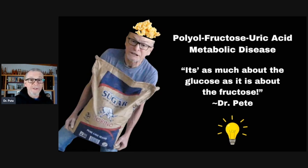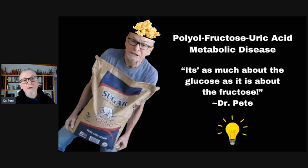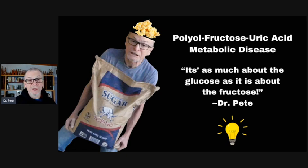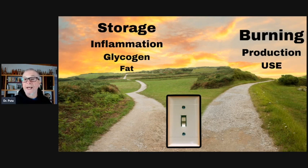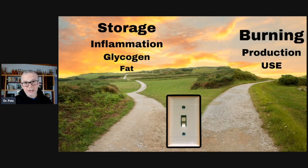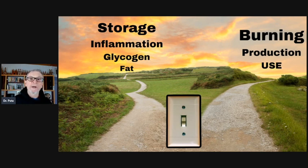The greatest resistance to accepting fructose uric acid metabolism as a main driver of metabolic disease is the assumption that only fructose activates this metabolism. We now understand that activation of fructose uric acid metabolism is as much about the glucose as it is about the fructose. When we eat carbohydrates of any type, both glucose and fructose arrive at the liver from the digestion of that carbohydrate, and both will be processed by the same pathway.